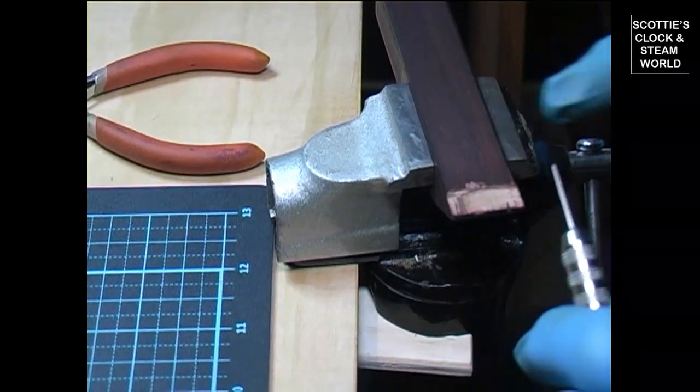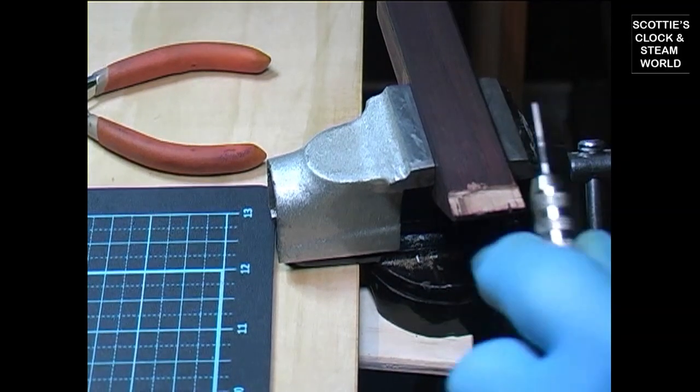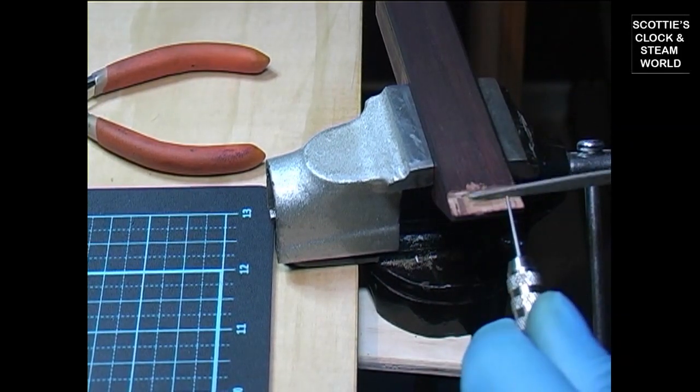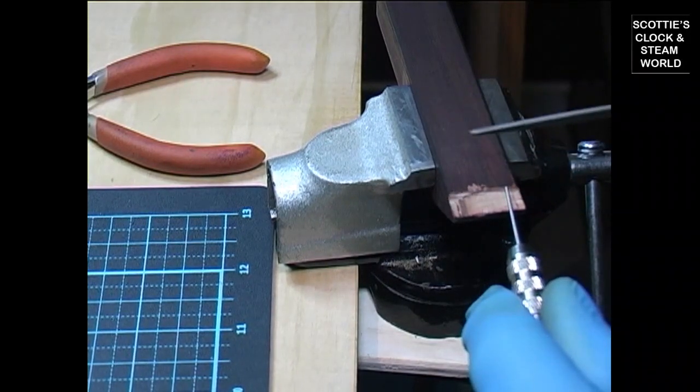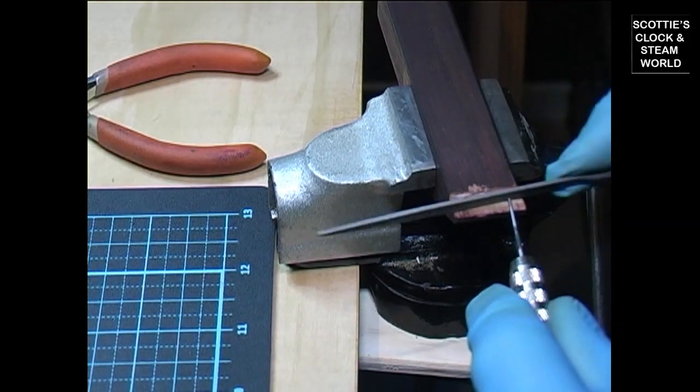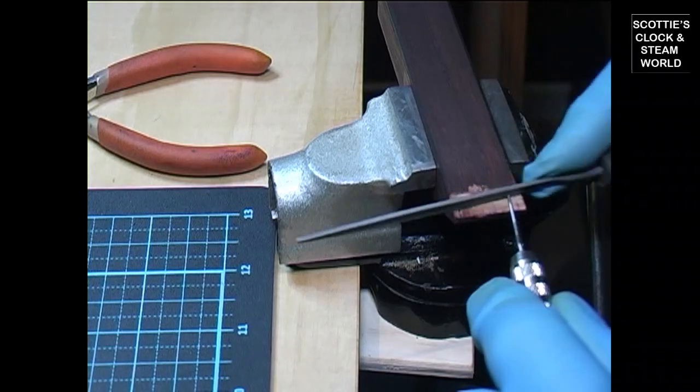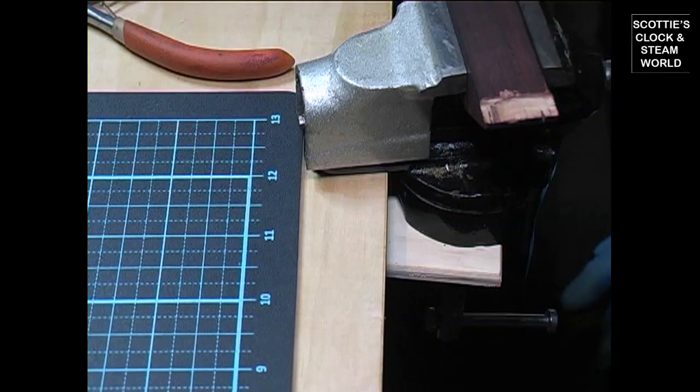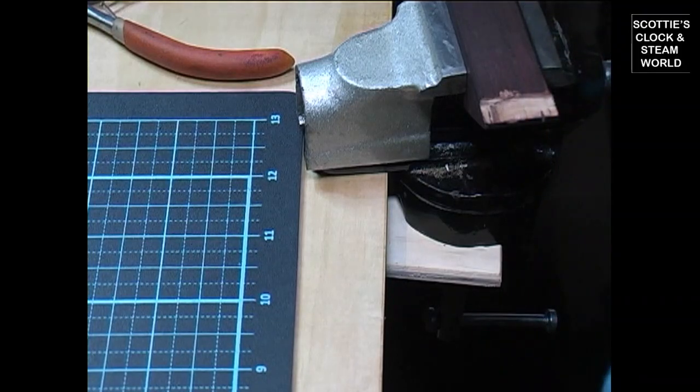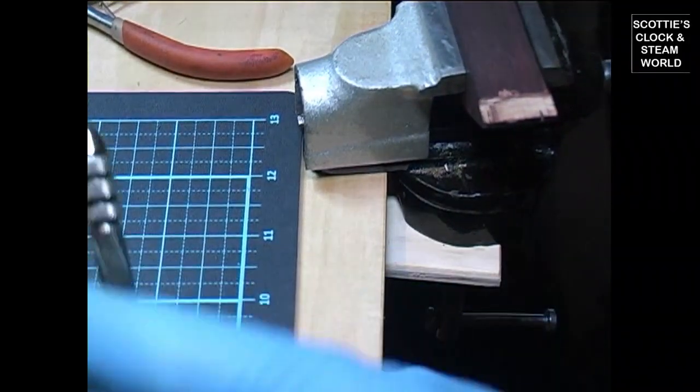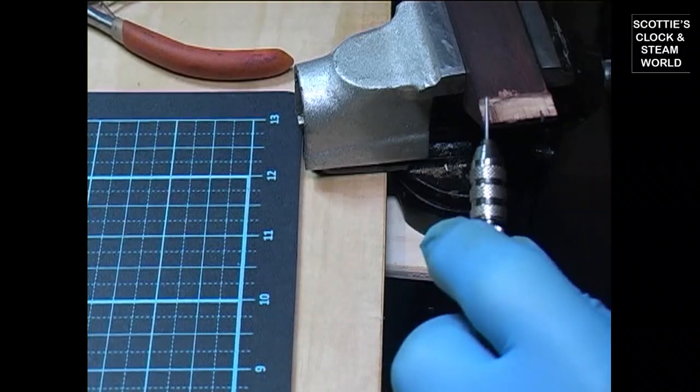Rest the exposed end of the pin in one of the slots in the timber support. Using the needle file, file the end of the tapered pin flat. Then using the pivot file, file the top edge of the tapered pin at approximately 45 degrees. While doing this, slowly turn the pin vise between your fingers backwards and forwards.